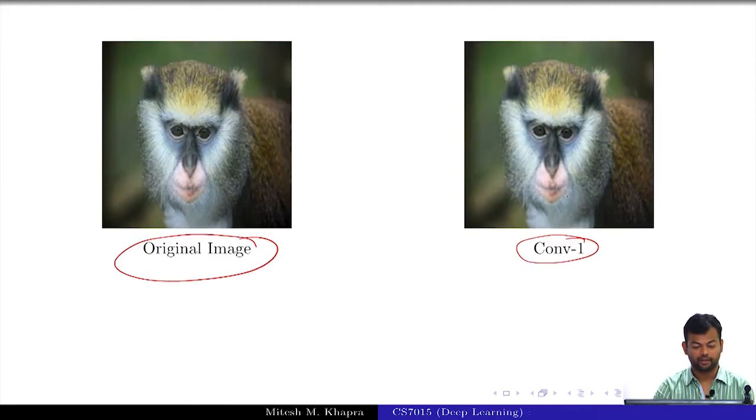Let us see what are the different outputs that I get. This is the original image and on the right hand side you have the reconstructed image such that the conv 1 embedding of both the images is the same. When I am trying to do a reconstruction from the conv 1 layer I get almost the same image back.